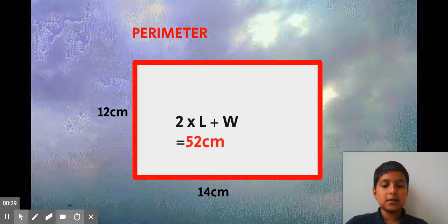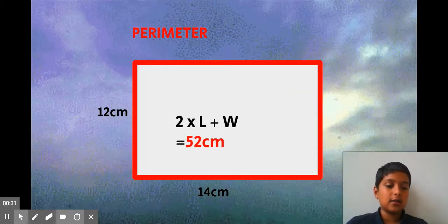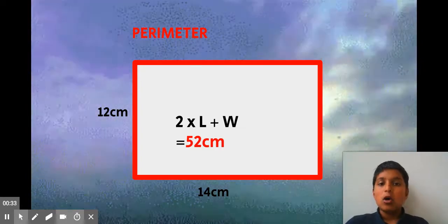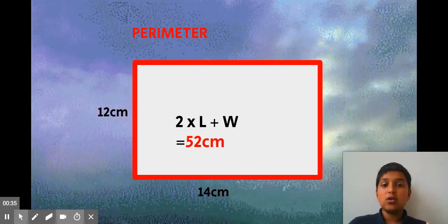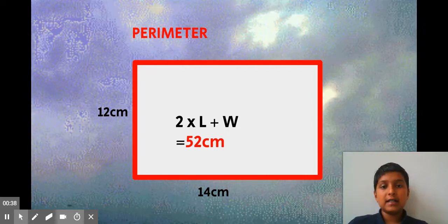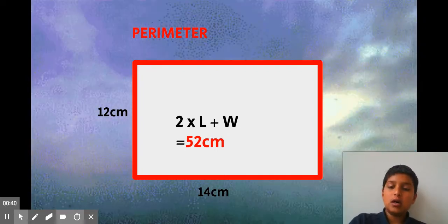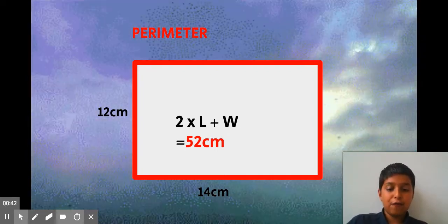So pretend I have a rectangle like this. Now, in order to find the perimeter of a rectangle, you will need the length. So we have 14 centimeters over here.